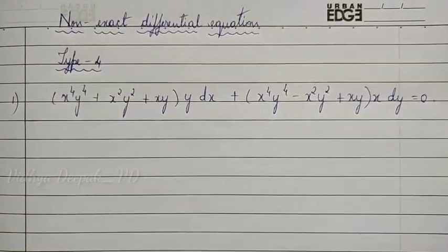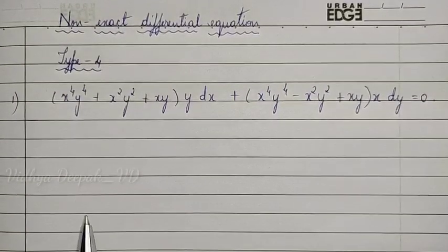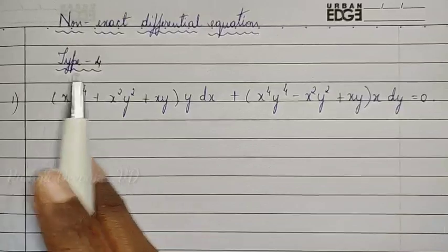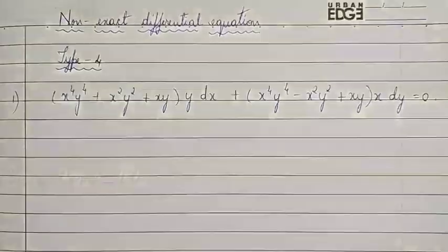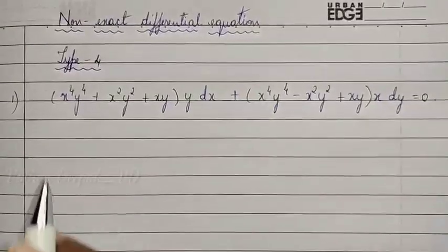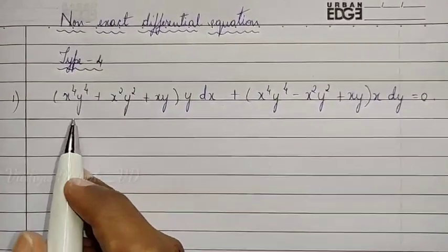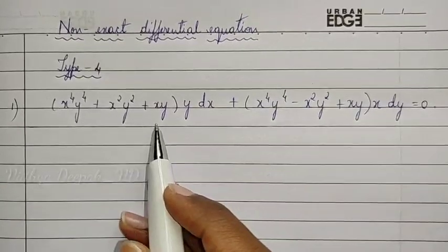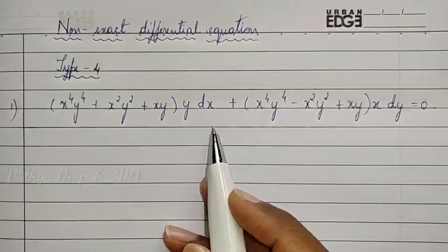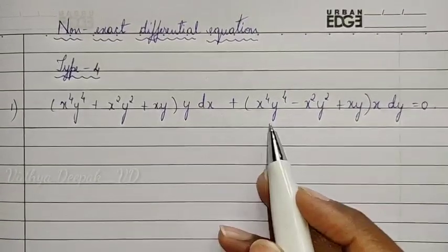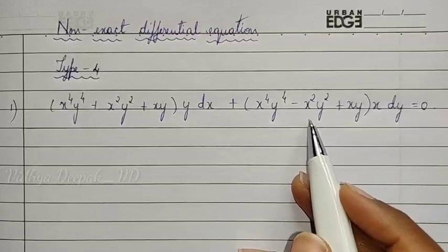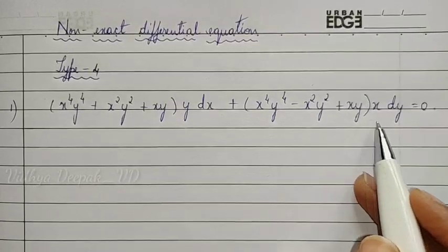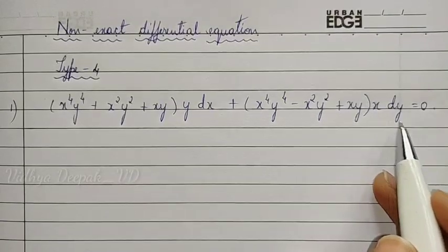Hello everyone. Today we will continue with non-exact differential equation type 4. We have a first question: x⁴y⁴ + x²y² + xy into y dx plus x⁴y⁴ − x²y² + xy into x dy.